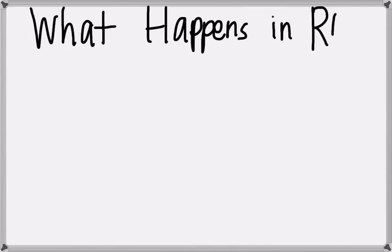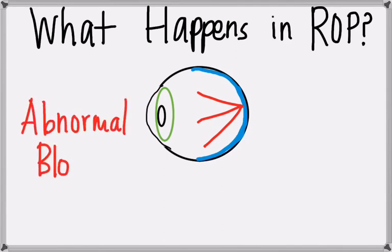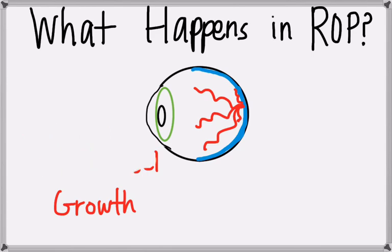What happens in ROP? ROP causes blood vessels to grow in abnormal ways. The blood vessels grow abnormally in the eye and can grow inside the layer of the eye called the retina. This can cause scarring of the retina and when the scars shrink, they can pull on the retina layer, causing the retina to become removed from the back of the eye, causing what is called retinal detachment.